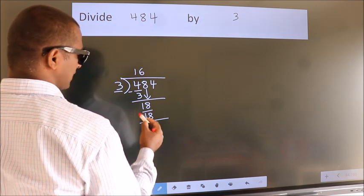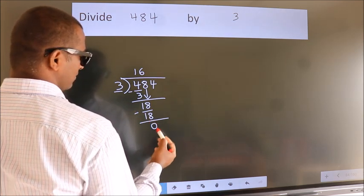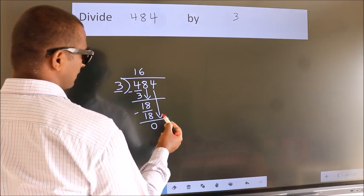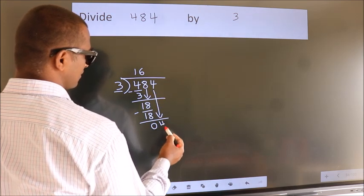Now, we subtract. We get 0. After this, bring down the beside number. So, 4 down. So, 4.